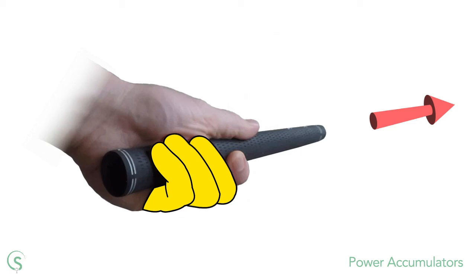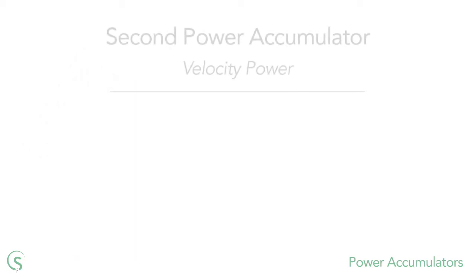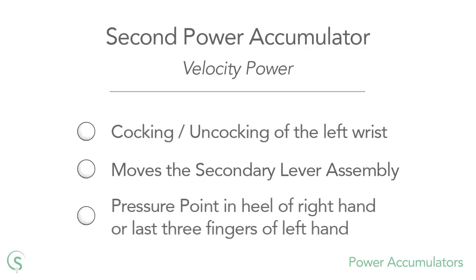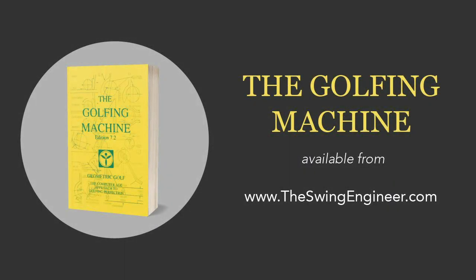So that's the second power accumulator, the cocking and uncocking of the left wrist. If you'd like to read more about the accumulators and other concepts from The Golfing Machine, you can do so at my website, theswingengineer.com.